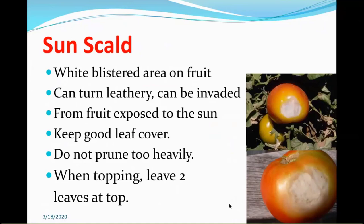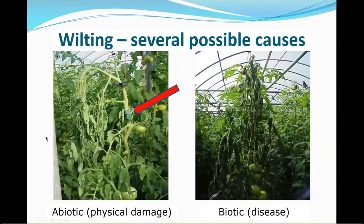Sun scald is like sunburn — a white or tan blistery area on fruit exposed to direct sun. It's not a disease, but if the scalded area splits open from drying out, it can be invaded by a pathogen and cause fruit rot. Don't prune too heavily — always leave two leaves at the top when topping.